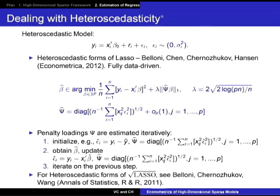The specification of penalty loadings entails the true disturbances, which we don't observe. But they could be estimated in an iterative fashion: initialize the disturbances as deviations from the sample mean, initialize the penalty loadings, obtain the initial lasso estimator beta-hat using those penalty loadings, then update the residuals, update the penalty loadings, and iterate. We have proven that this procedure works. There is also a heteroscedastic form of root lasso. I need this slide because Chris will later present empirical applications using this heteroscedastic formulation.